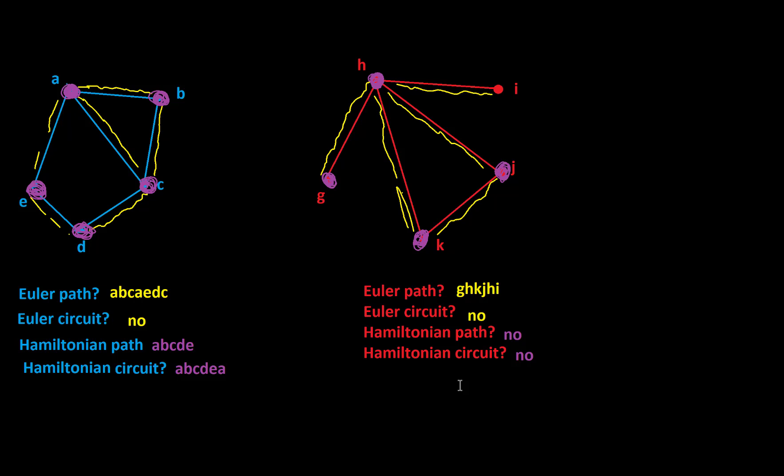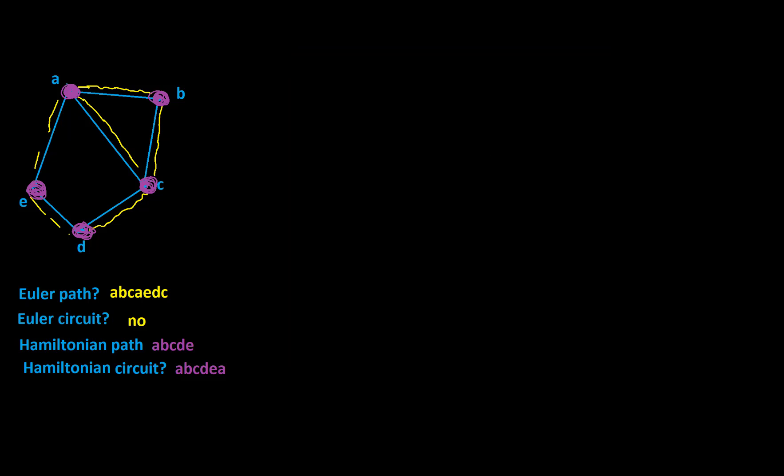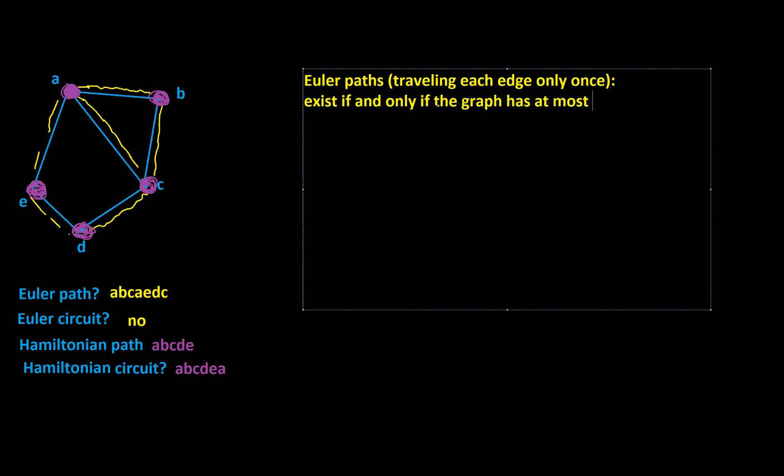Okay, so lastly, I'd like to give you some characterizations so that you can use these tools to figure out if you've got an Euler path or an Euler circuit. So let me clear the board a bit here. So some helpful tips. Euler paths, remember you're traveling each edge only once. So Euler paths exist if and only if the graph has at most two vertices of odd degree.